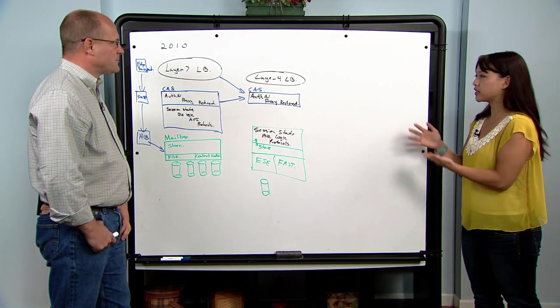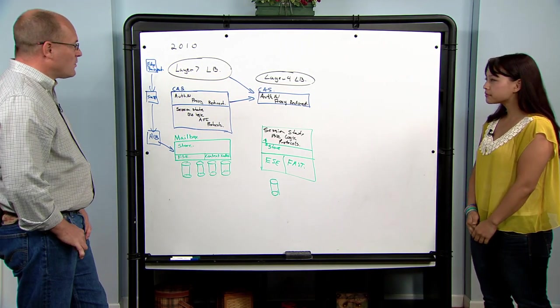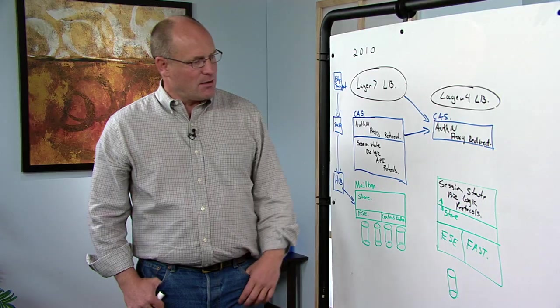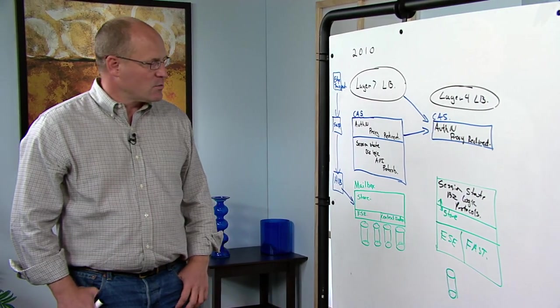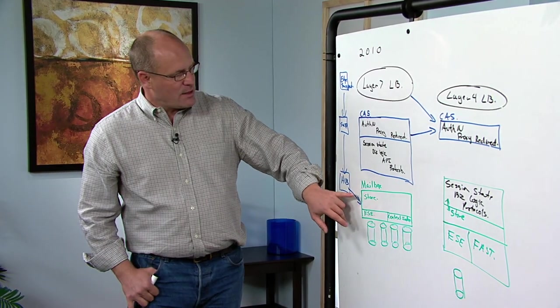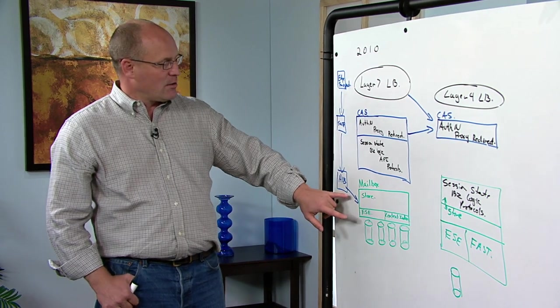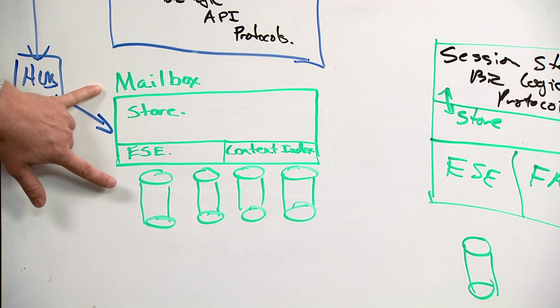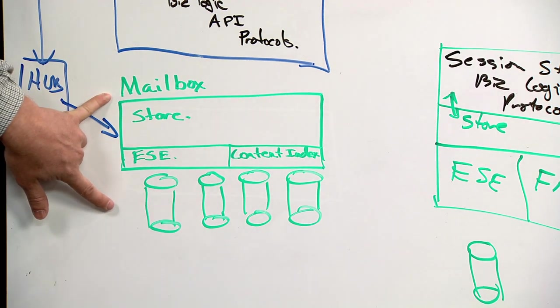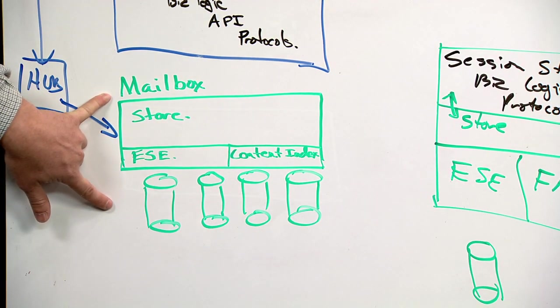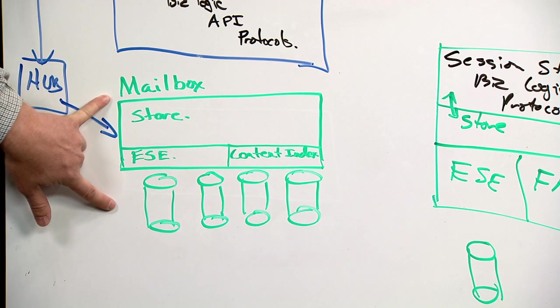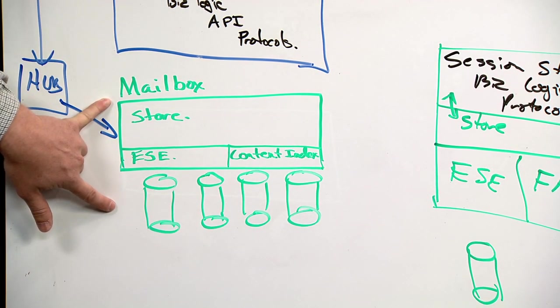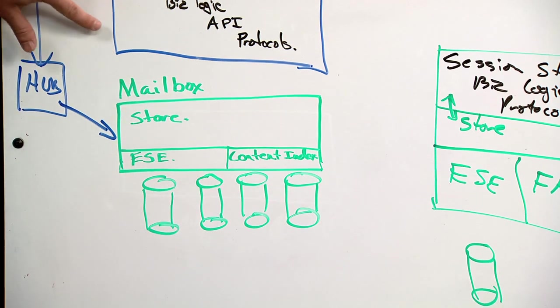So what about high availability in this new system? So it's actually a key part of making this work. Over the last couple of releases, we've been working a lot on our high availability story. And one of the interesting things we discovered was that we could get really good at doing failovers and doing that very quickly. If we ran into an issue, we could get a failover done in 30 seconds or less.